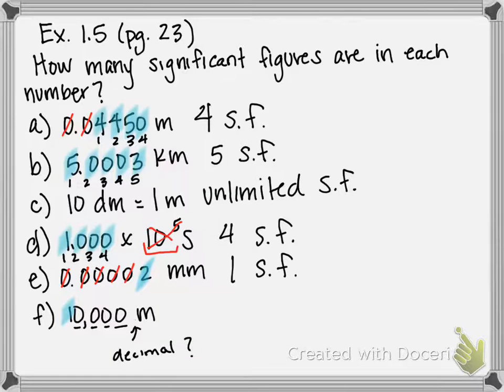So try to avoid writing numbers like this. Make sure that if you want to count those zeros as significant, you put a little decimal there. If you put a decimal there, those become significant and it's not ambiguous anymore. Hopefully that helps clarify some of the significant figure counting rules.